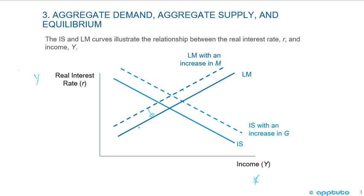With a higher real money supply, the intersection on the IS curve has moved — it's happening at a higher level of real income on the X axis, so the real income has increased, but at a lower rate of real interest rates.